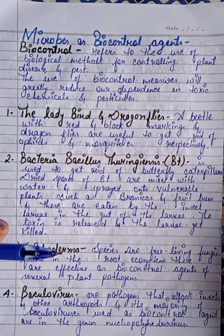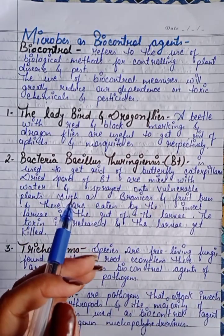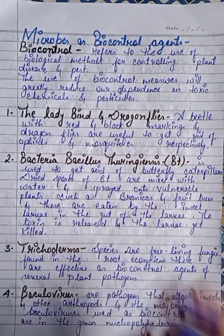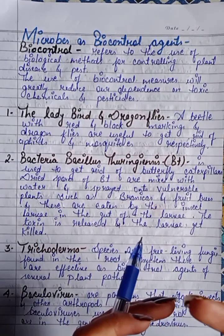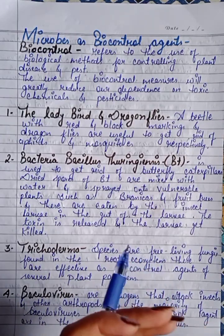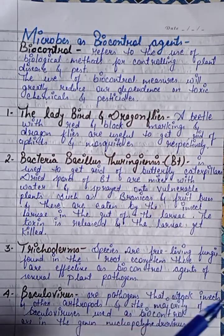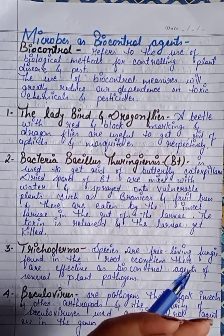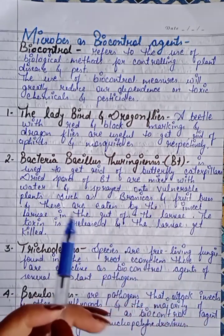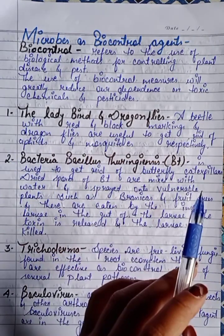If we use biocontrol agents for our plant diseases, currently in our fields we use chemicals, pesticides and insecticides to kill or control pests. But the harm from using insecticides and pesticides in our fields is that they reduce our soil fertility. Our first biocontrol agent is the ladybird and dragonfly.